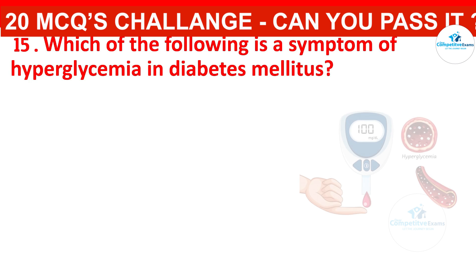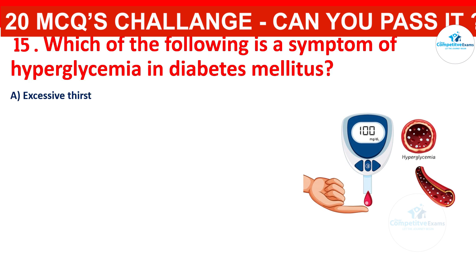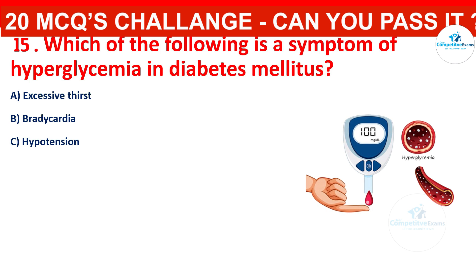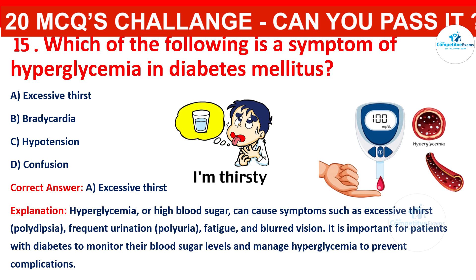Which of the following is a symptom of hyperglycemia in diabetes mellitus? Your options are: excessive thirst, bradycardia, hypotension, or confusion. The correct answer is excessive thirst. Hyperglycemia, or high blood sugar, can cause symptoms such as excessive thirst, frequent urination, fatigue, and blurred vision. It is important for patients with diabetes to monitor their blood sugar levels and manage hyperglycemia to prevent complications.